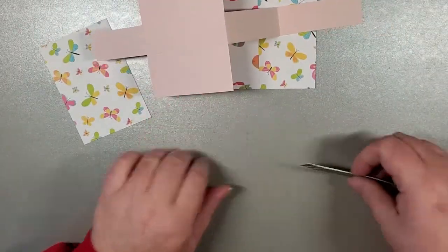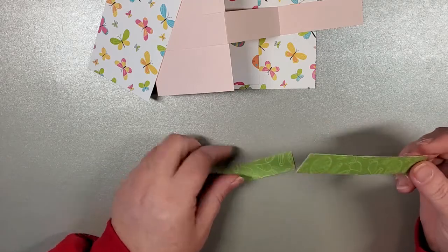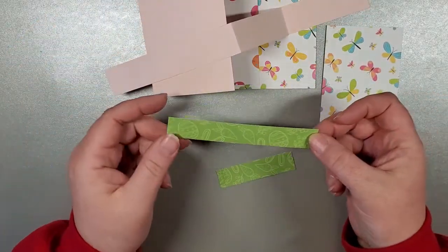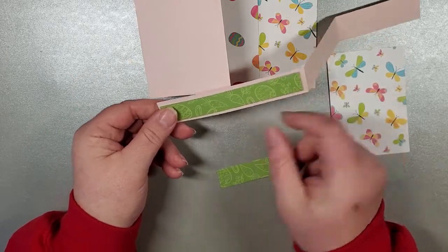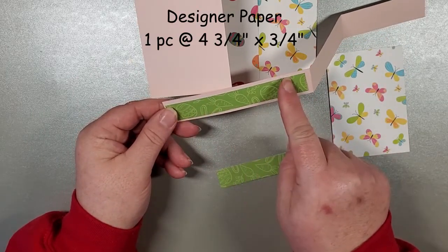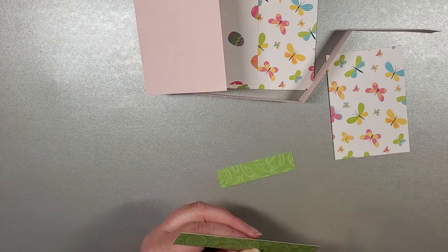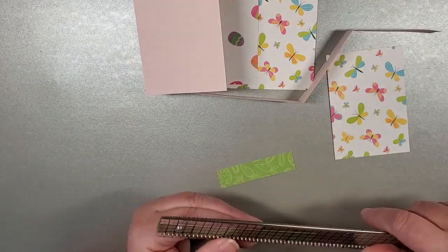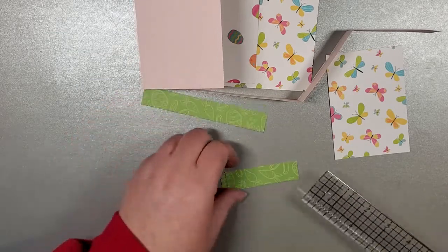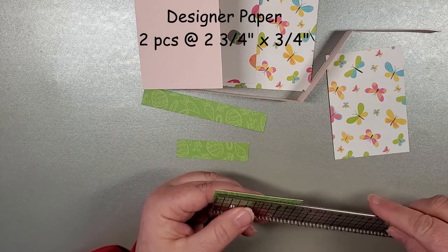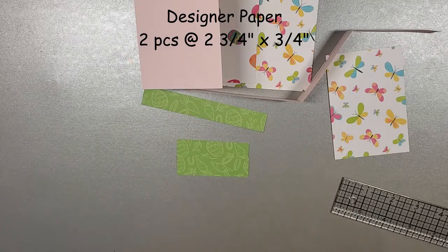We've got some strips too that will cover a little bit of the strip that we have at the bottom. The first piece is 4 and 3 quarters by 3 quarters. And then you're going to need two pieces that are 2 and 3 quarters by 3 quarters, and you need two of those pieces and then we're all set.